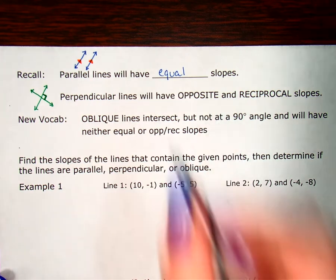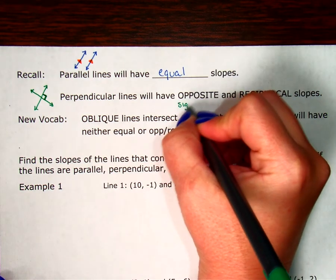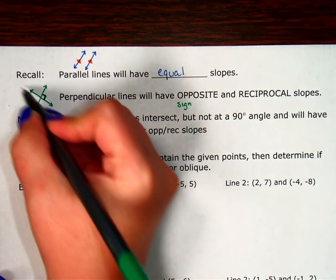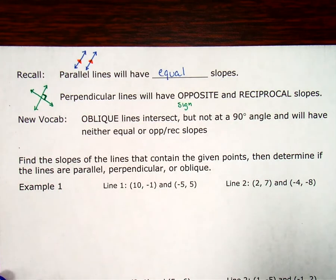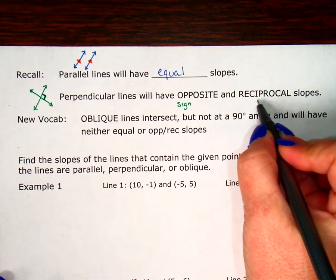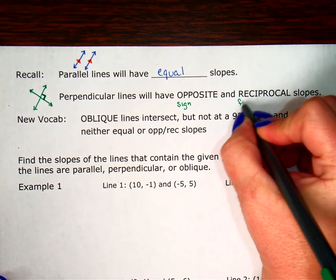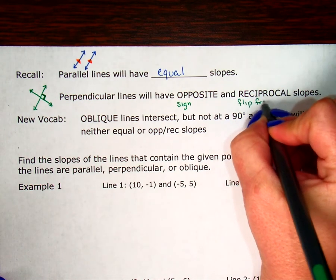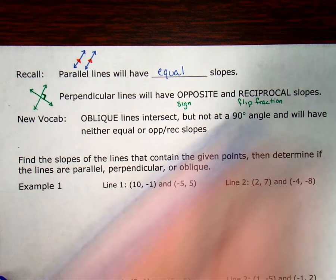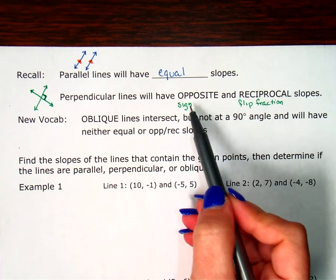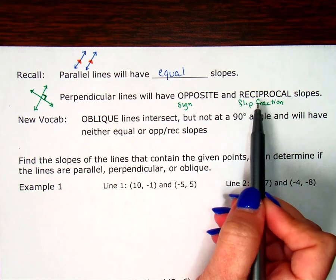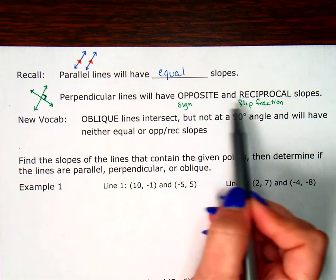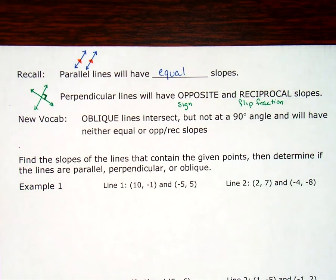So remember, your opposite is referring to the sign. One's going to be positive, uphill, and the other will be negative, downhill. They'll also have reciprocal slopes, which means we're going to flip over that fraction for the slope. So it has to be both of those. It can't just be opposite. It can't just be flipped. It has to both be opposite and it has to be flipped.